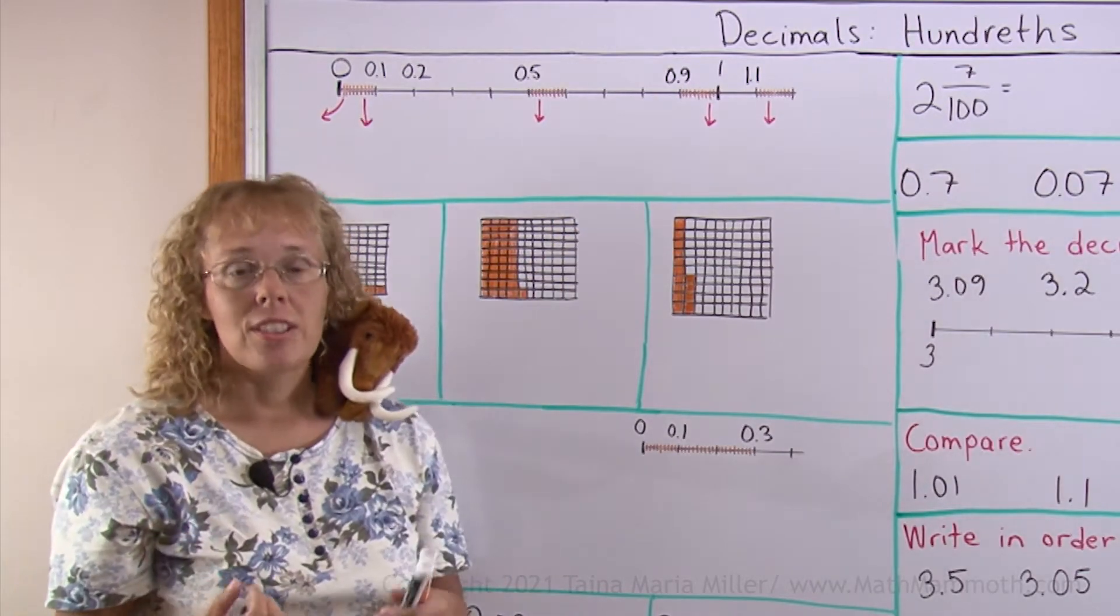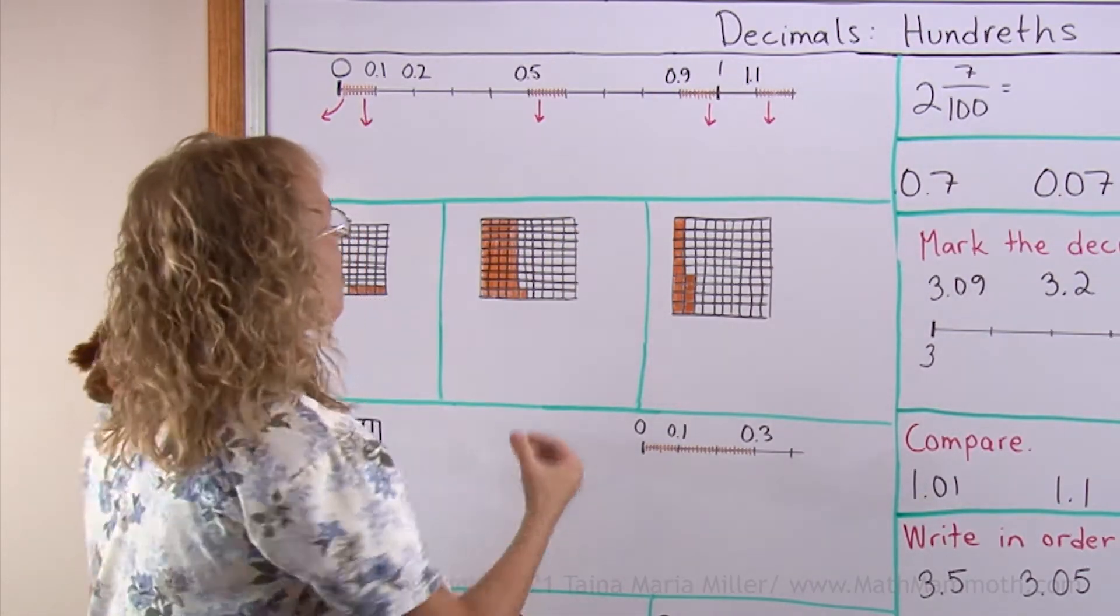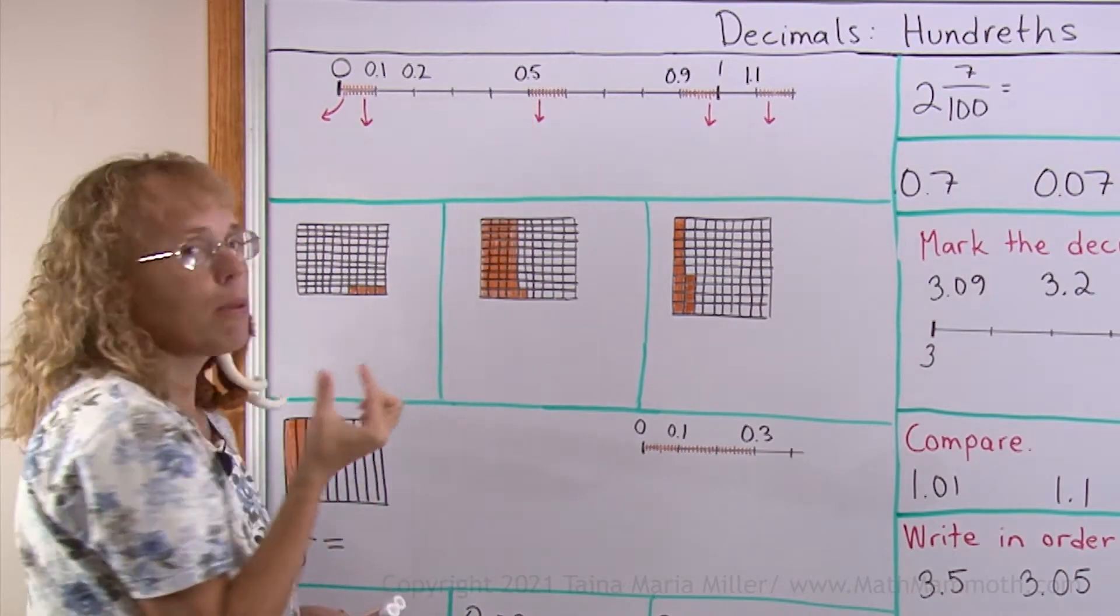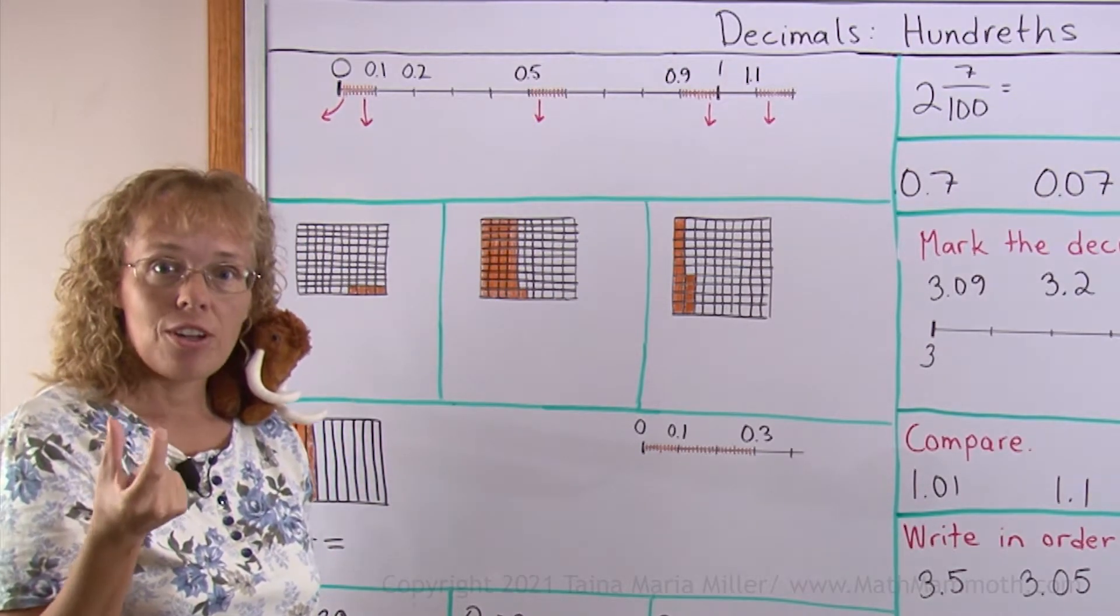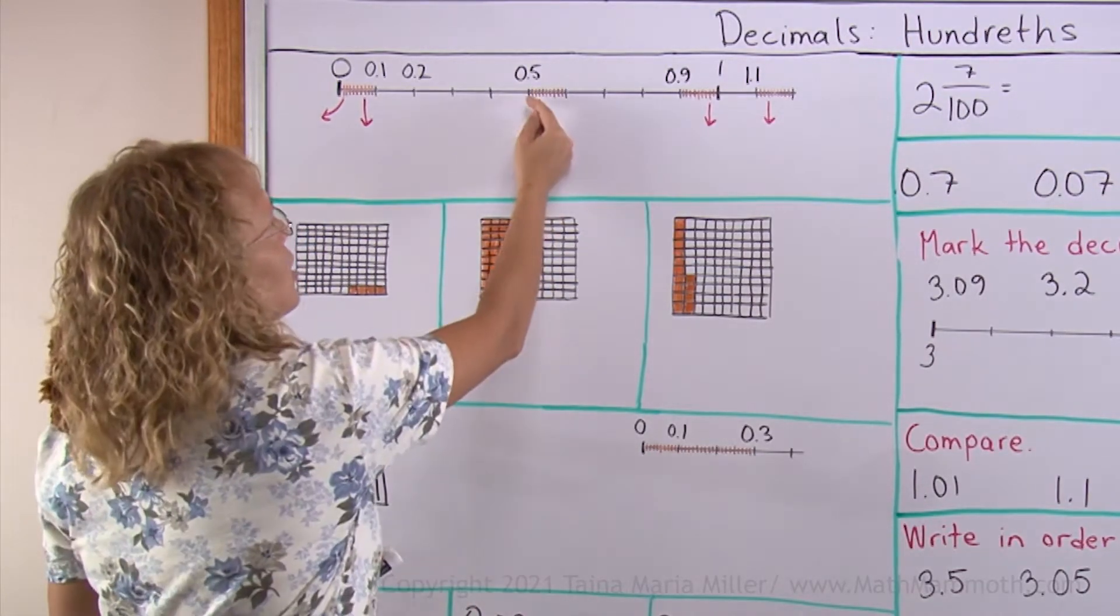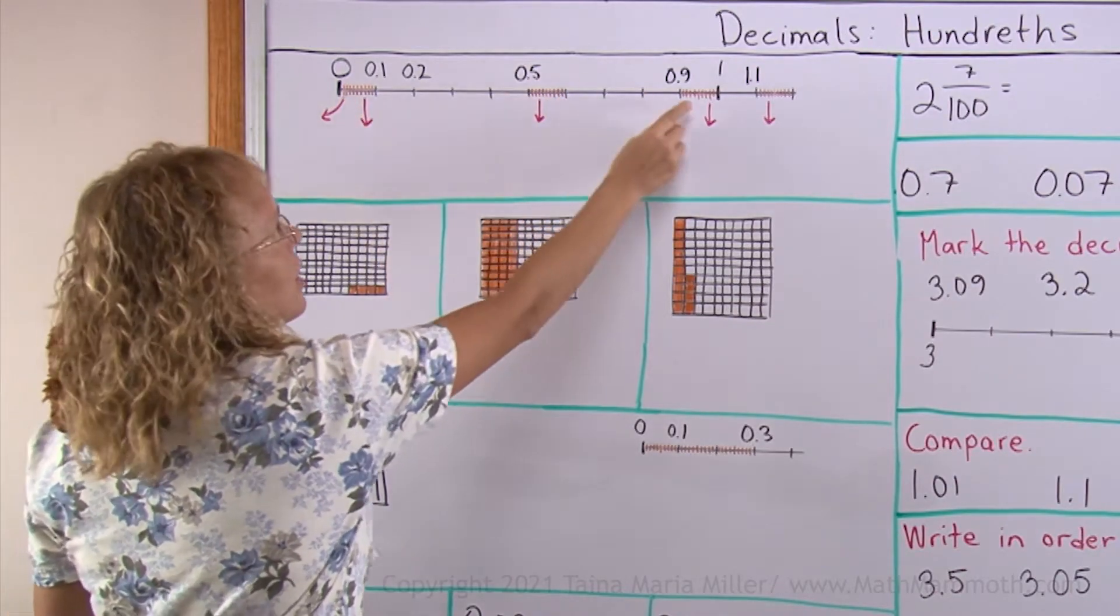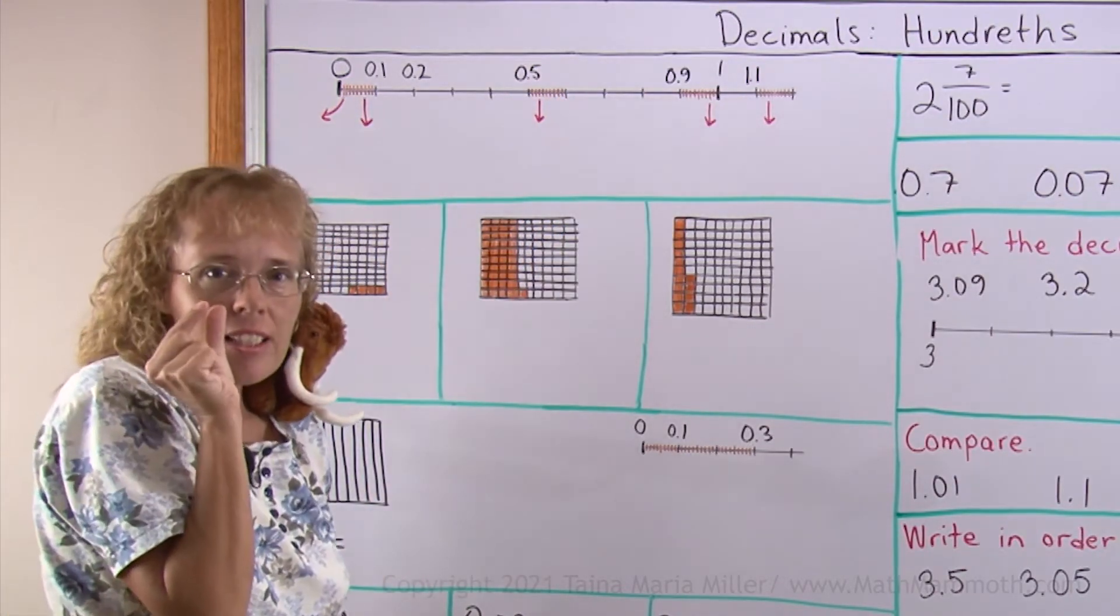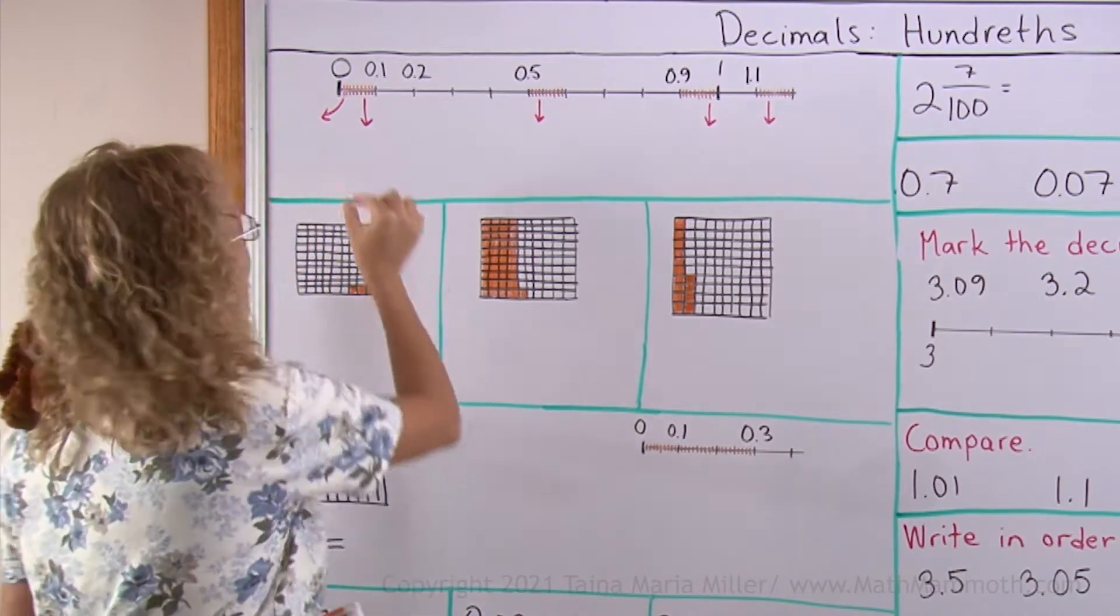And now hundredths come about this way. We will take each interval of 1 tenth and divide it further into 10 new parts, as you see me having done here and here and here and here. So those teeny little intervals are hundredths.